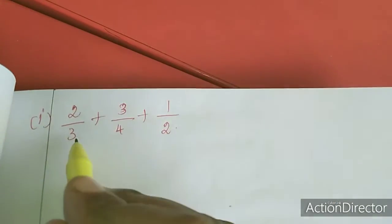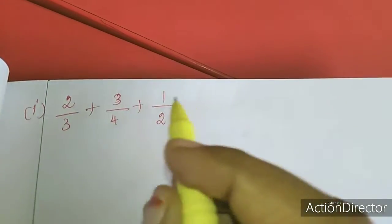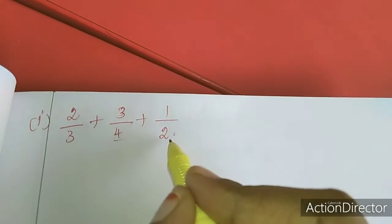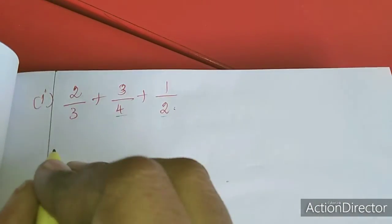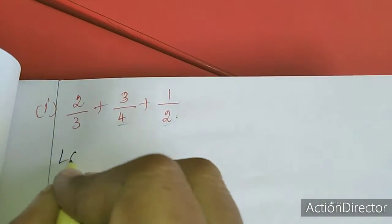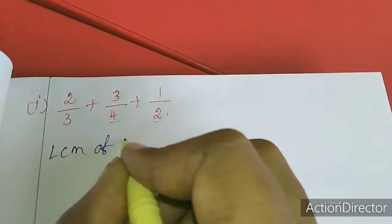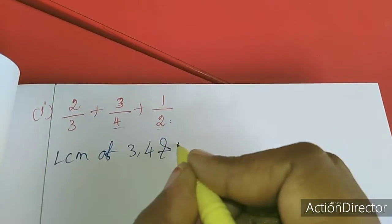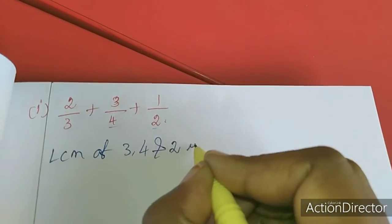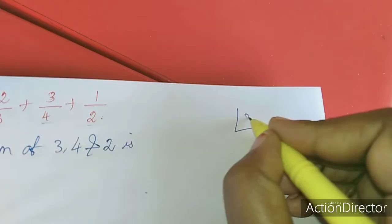This is the form. See the denominator — everything is different. These two numbers will come in one table, so we have to find out the LCM. So LCM of 3, 4 and 2 is — I am going to find out.